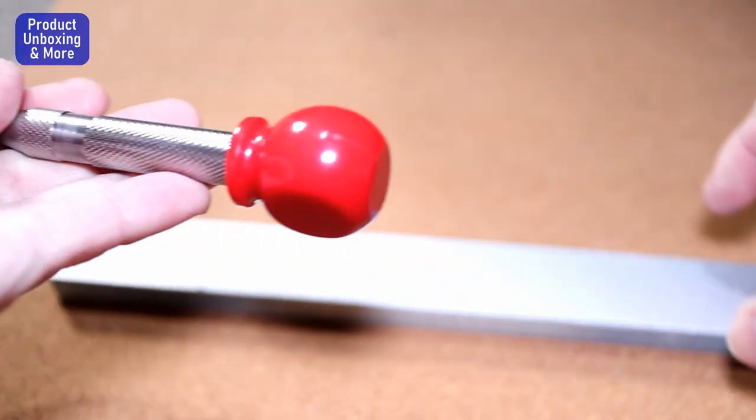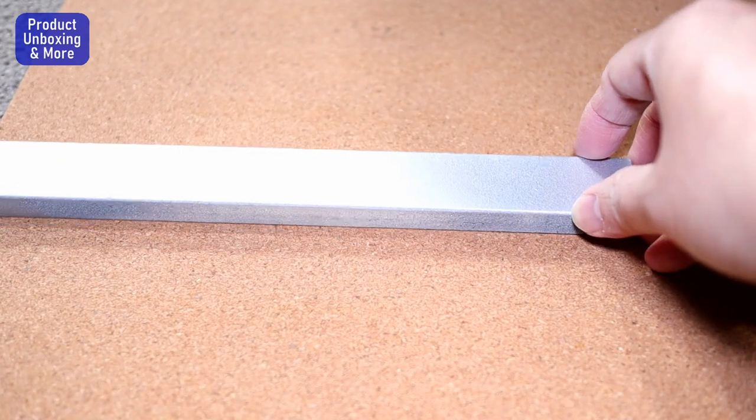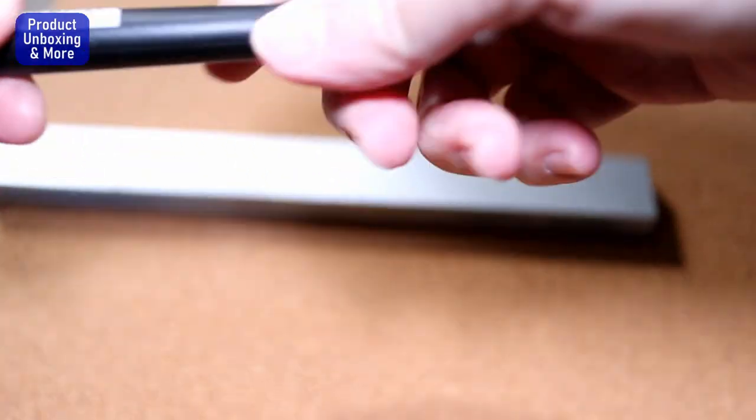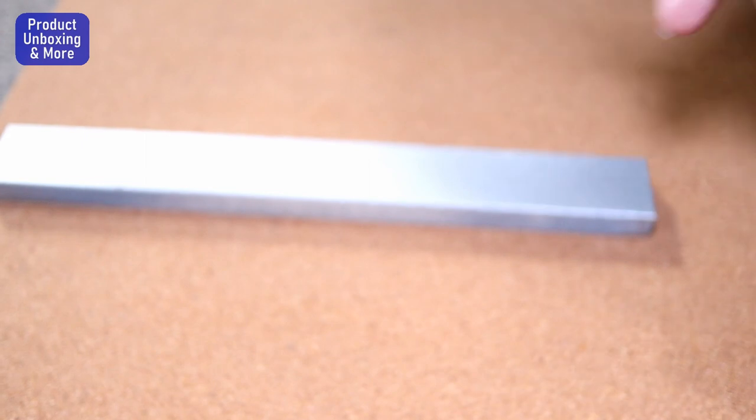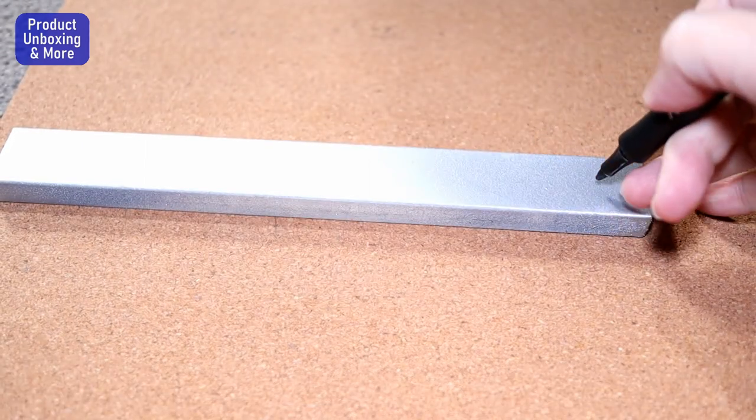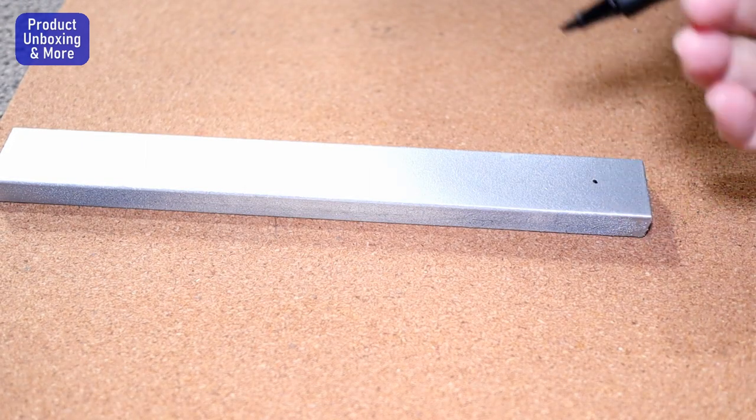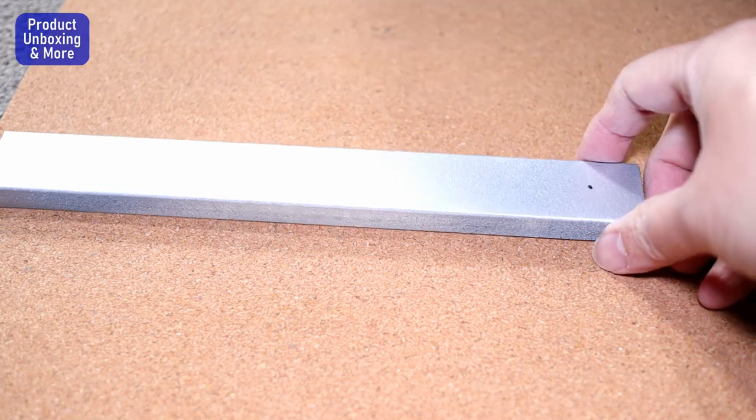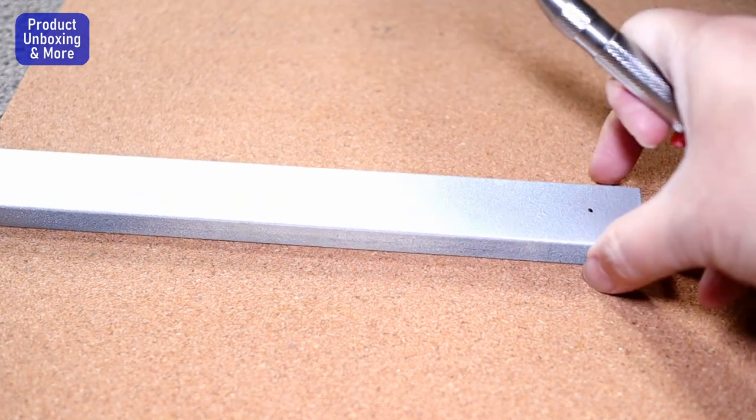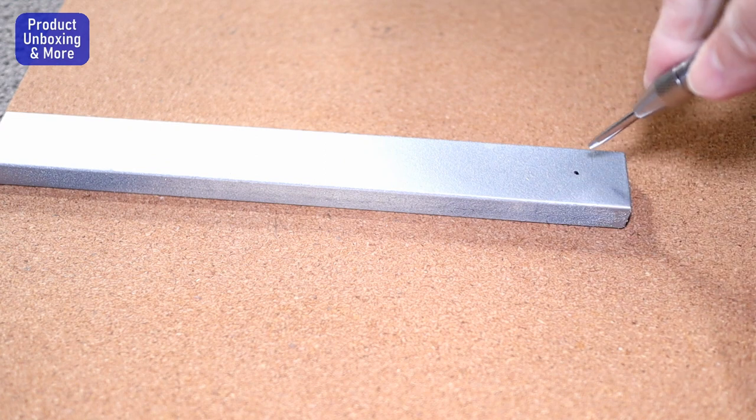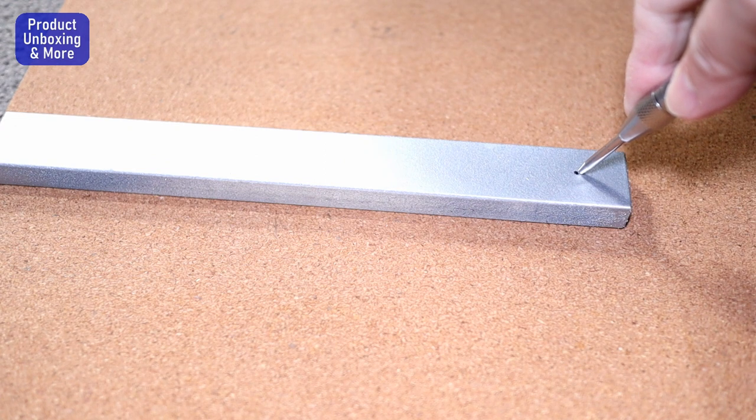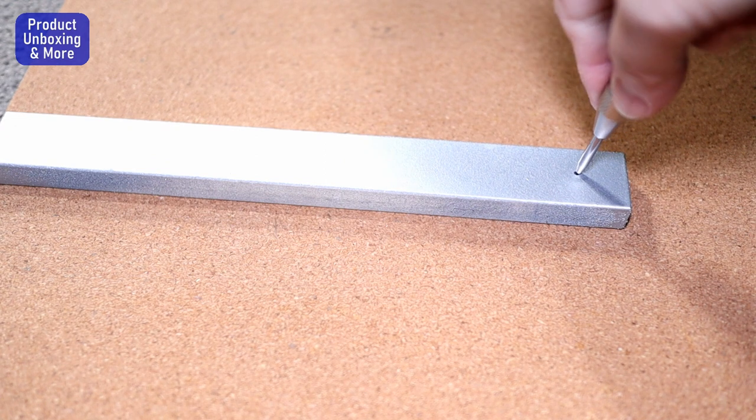Normally you can use this one for metal or wood. For example, if you want to drill a hole in this wood, you have to mark somewhere first. Then you place the tip of the punch on the mark.